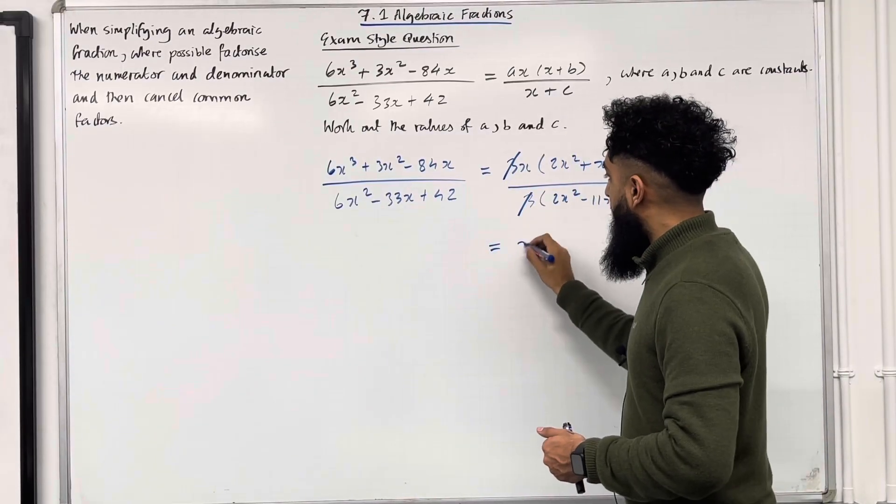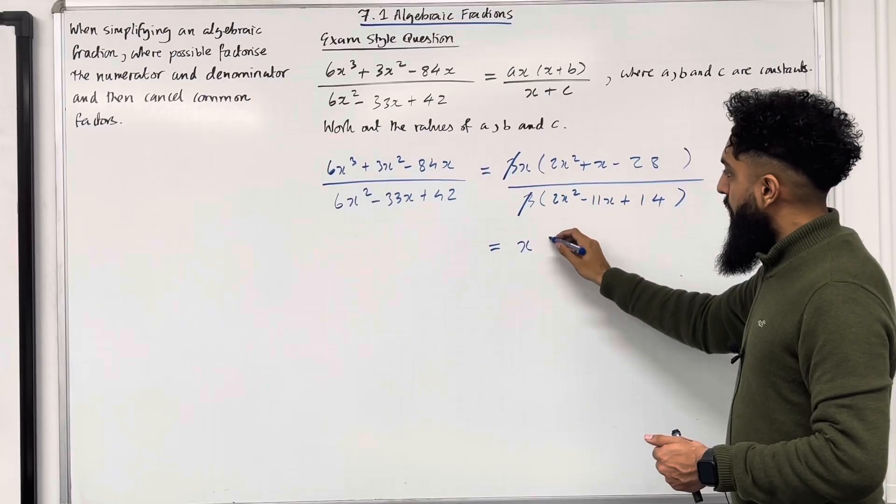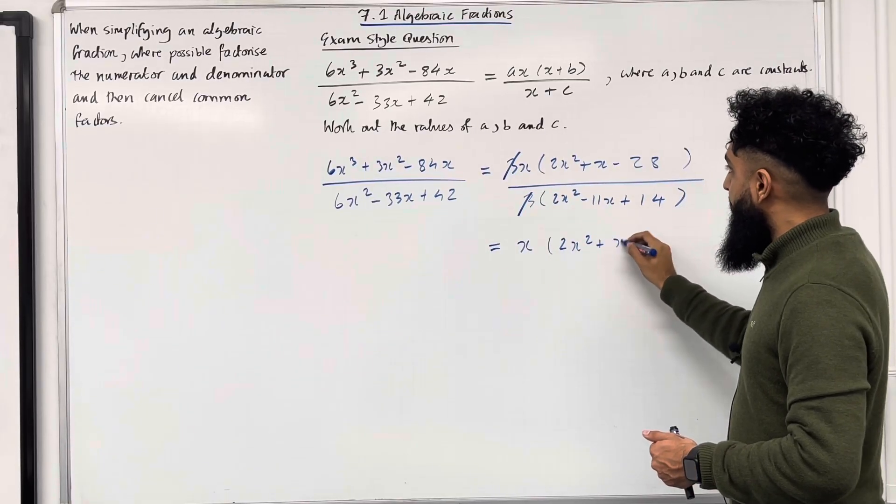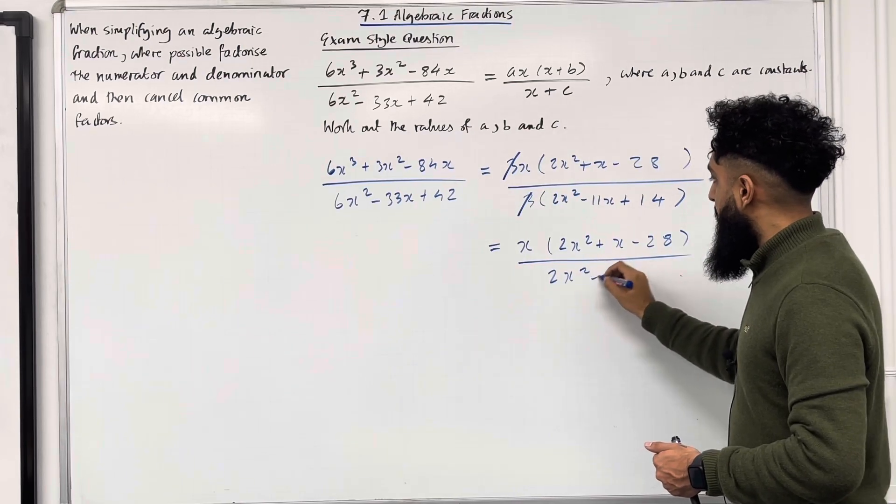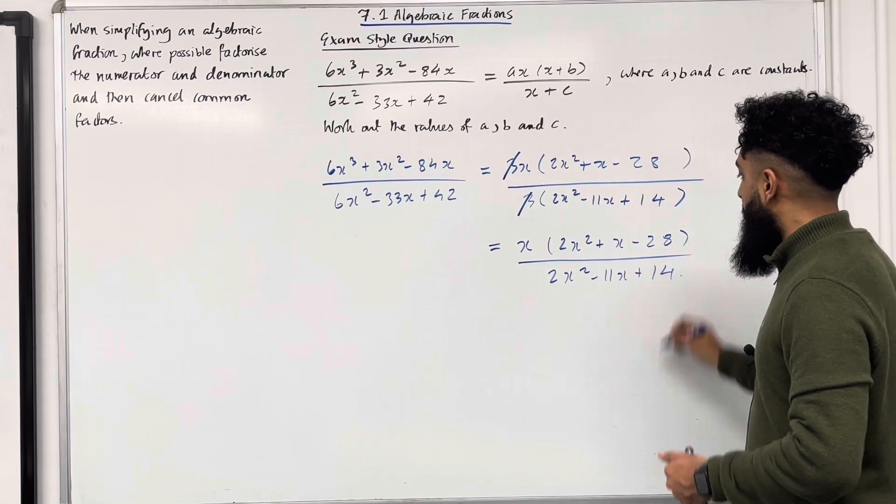We're left with x multiplied by 2x squared plus x minus 28 in brackets, divide by 2x squared minus 11x plus 14 in brackets.